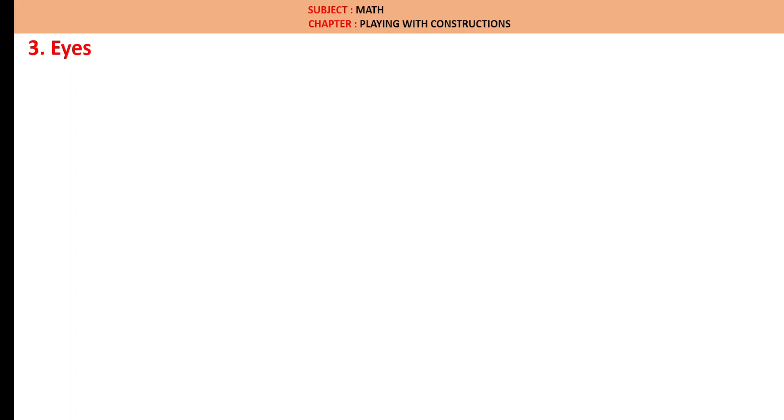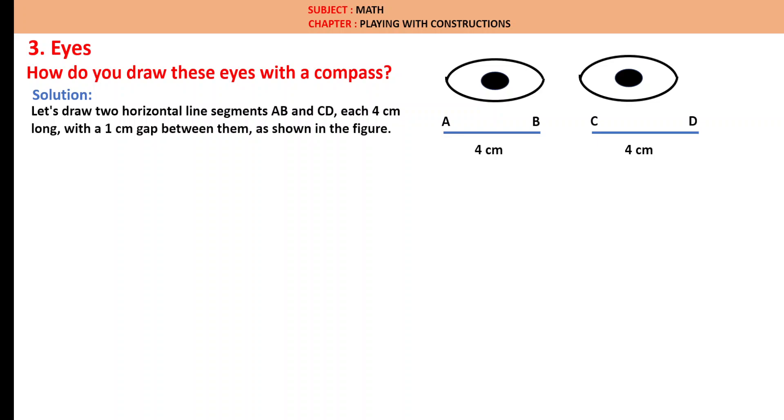Let us draw eyes. Question: how do you draw these eyes with a compass? Solution: Let us draw two horizontal line segments AB and CD, each 4 cm long, and a 1 cm gap between them as shown in the figure. Here we are drawing AB as 4 cm, CD as 4 cm. Just for our reference, we are giving this gap as 1 cm because we need a gap between these two eyes.